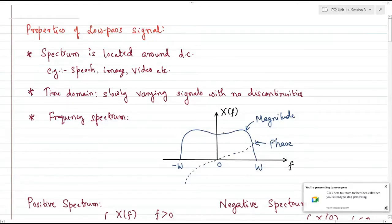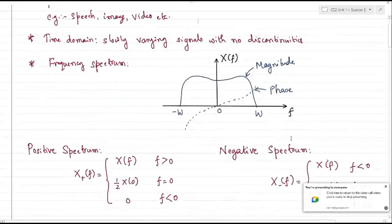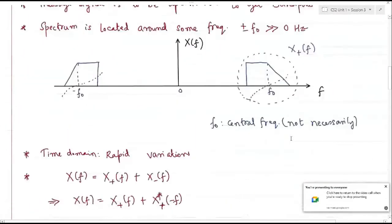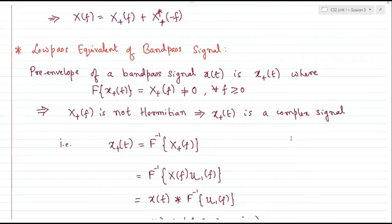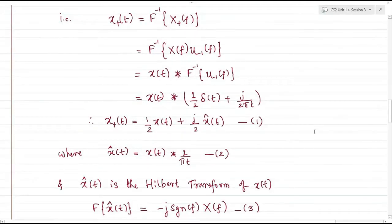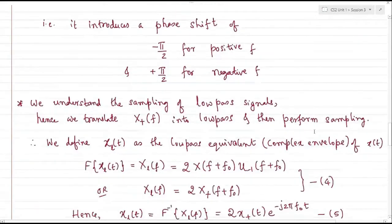In the last couple of sessions we started off with defining low pass and band pass signals. We started with properties of low pass signals as a definition, as well as for band pass signals. We started with representing band pass signals in terms of low pass and vice versa. We derived a low pass equivalent of the band pass signal, and in between we derived a special transform called the Hilbert transform.